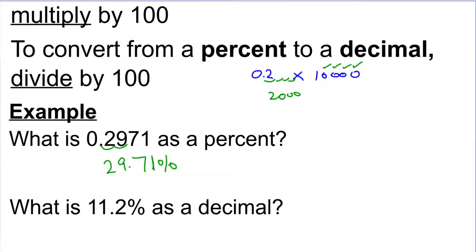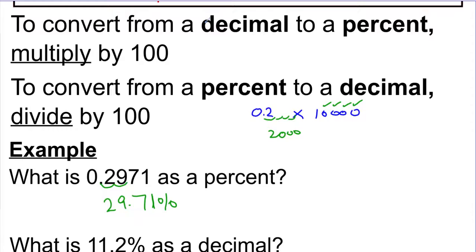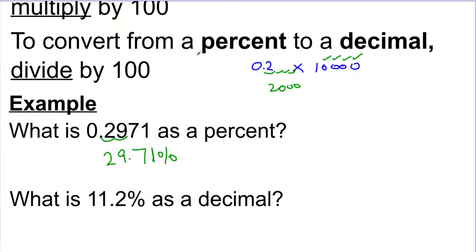This is 29.71%. So to summarize, to convert from a decimal to a percent, multiply by 100. But the quick way to multiply by 100 is to just move the decimal point two times, and I ended up with 29.71%.